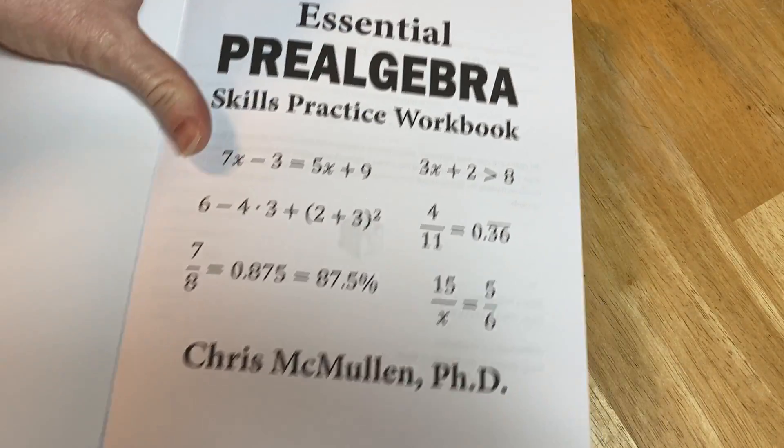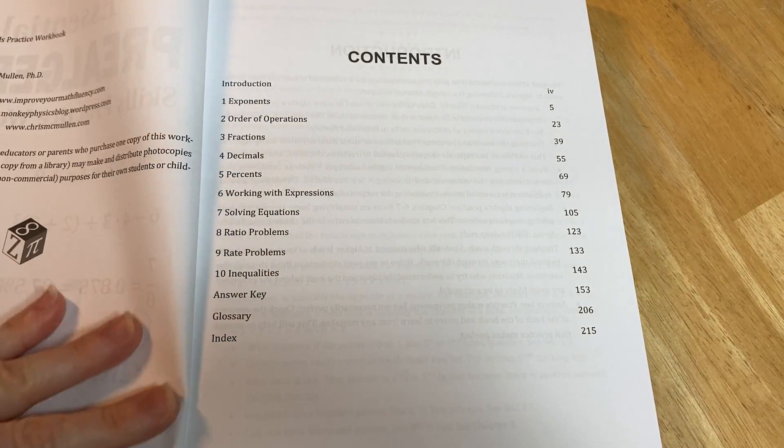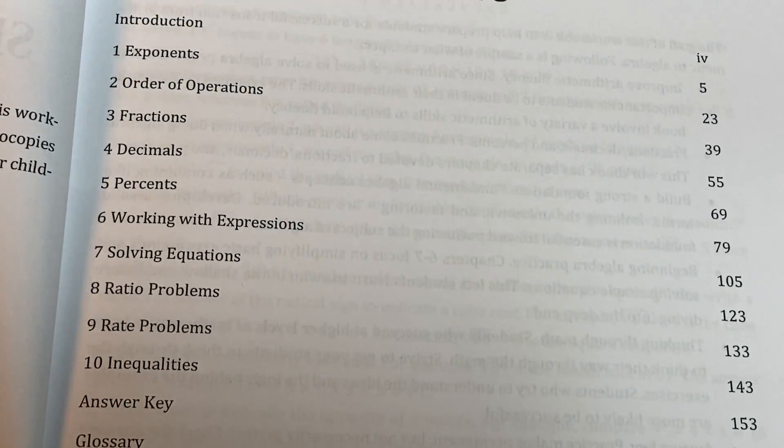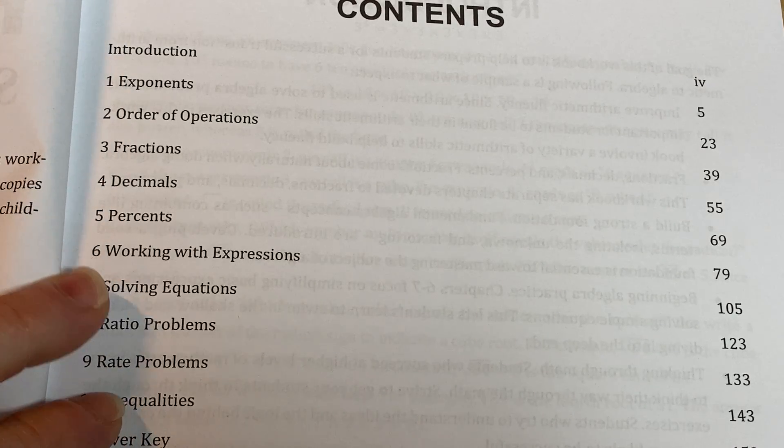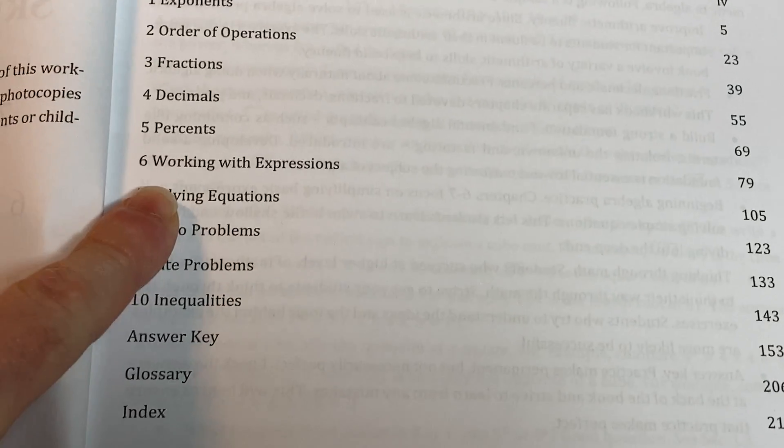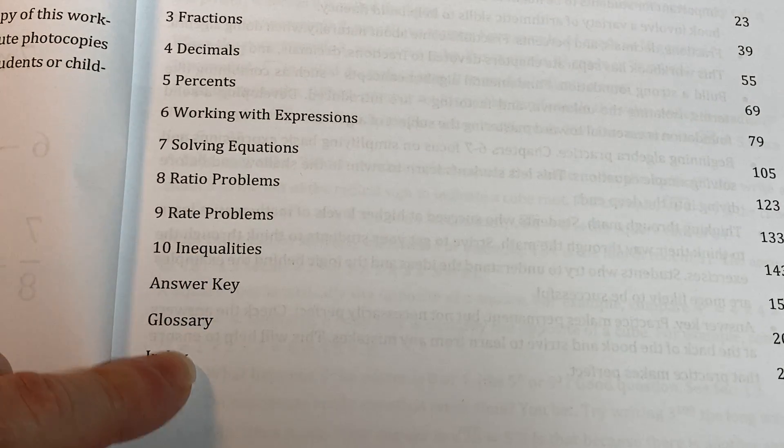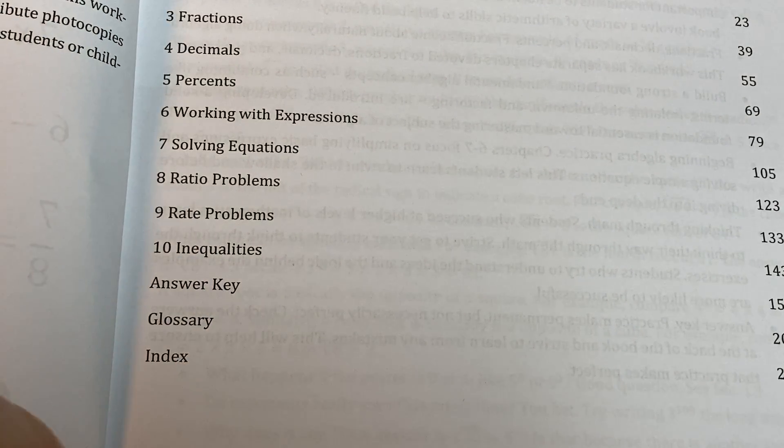Let's look at some of the topics that this book covers just to see if you think it's right for you because again this is for super super beginners. It starts with exponents. This is pre-algebra. Order of operations, fractions, decimals, percents, working with expressions, solving equations, ratio problems, rate problems and inequalities, and then you have an answer key.